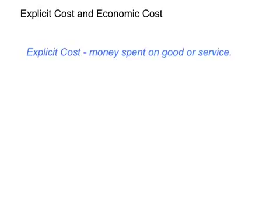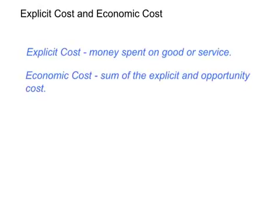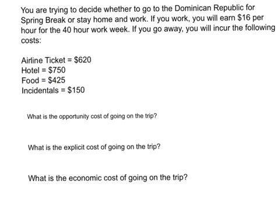Our next two costs are explicit costs and economic costs. Our explicit cost is the money spent on a good or a service. Our economic cost is the sum of explicit costs and opportunity costs — these are the total costs given up. In our next example problem, we will synthesize our knowledge of economic cost, explicit cost, and opportunity cost.